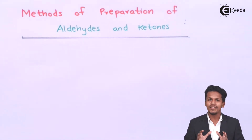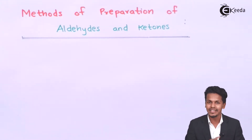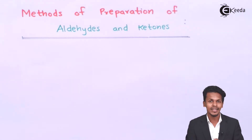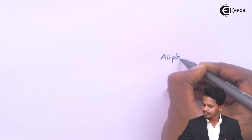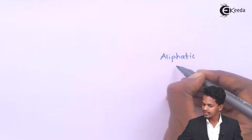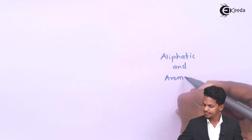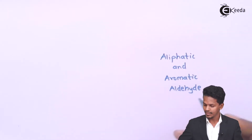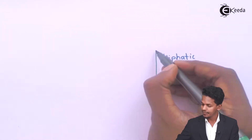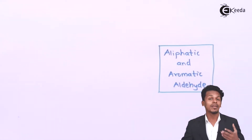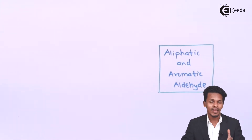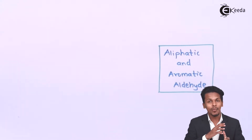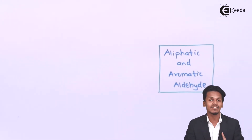Based on that, we are going to discuss a synopsis of which chemicals we can use to prepare aldehydes and ketones. So let us start with preparing aliphatic as well as aromatic aldehydes. This is just a synopsis, while in the next topic we will go into detail about each preparation method.